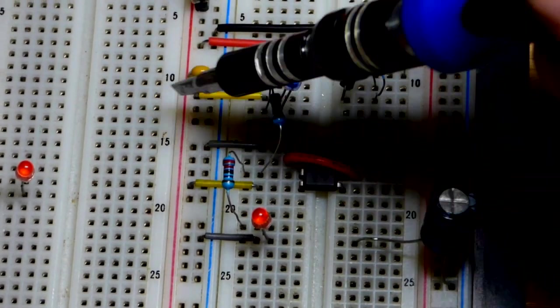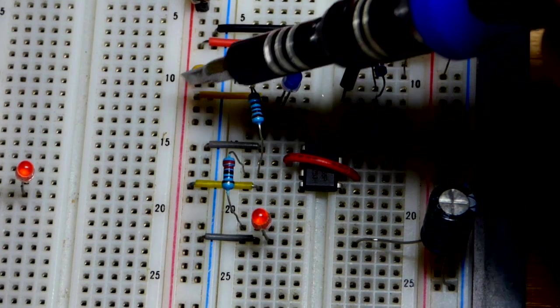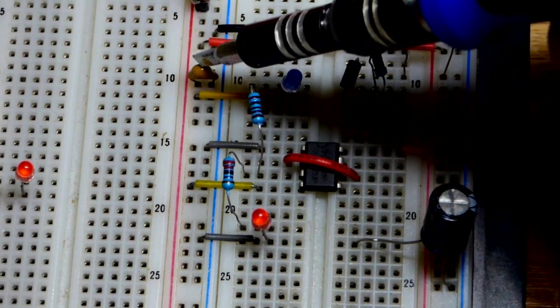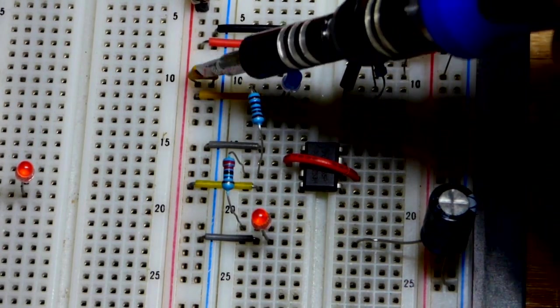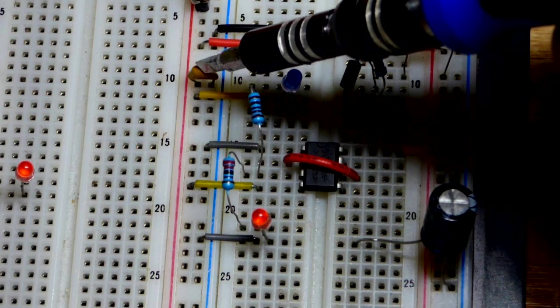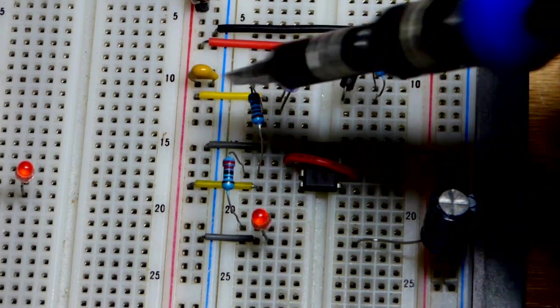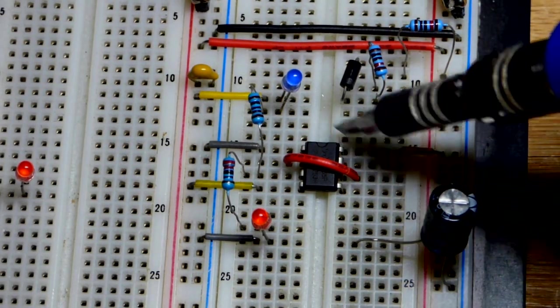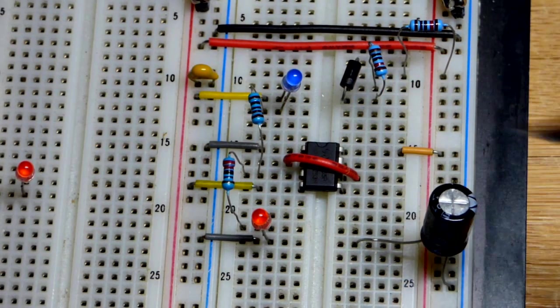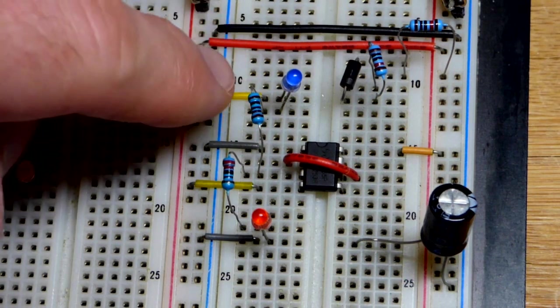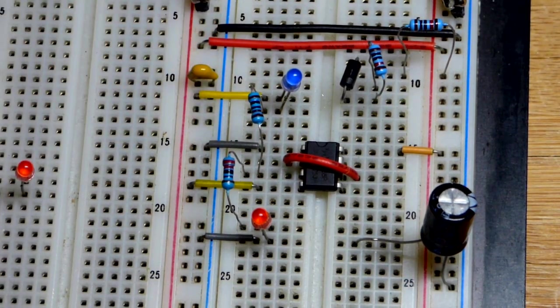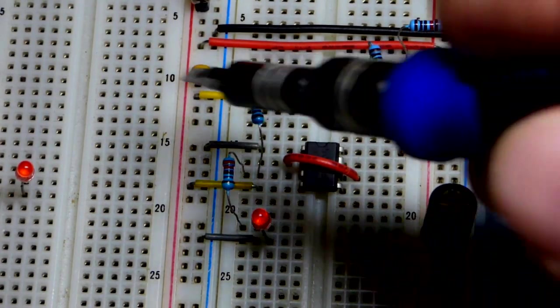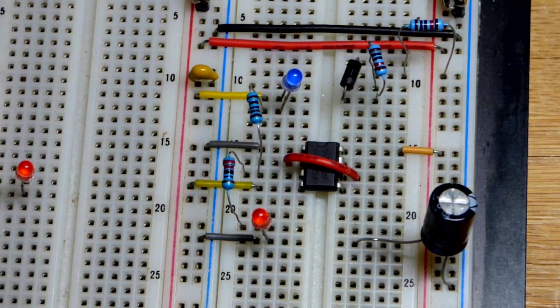I have a little capacitor right here. I didn't put it on the schematic. This is about half of a microfarad, 0.47. This is helping to keep the supply voltage a bit more stable. Usually you'd see that directly across the supply pins of the 555. This circuit was working pretty good without it, but it's a good idea to have that.